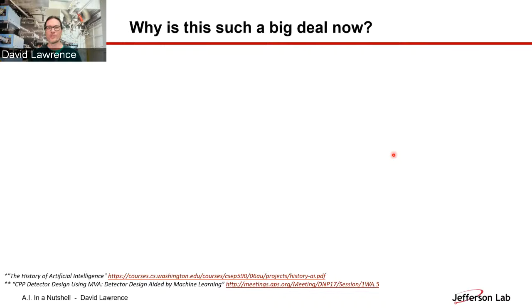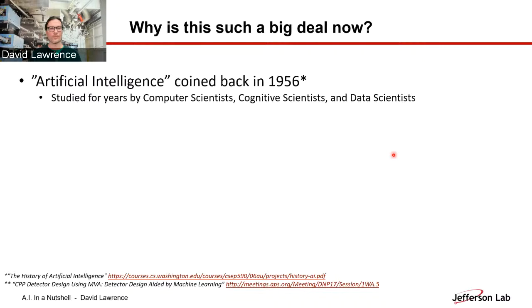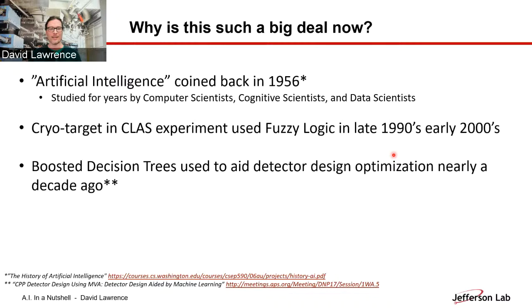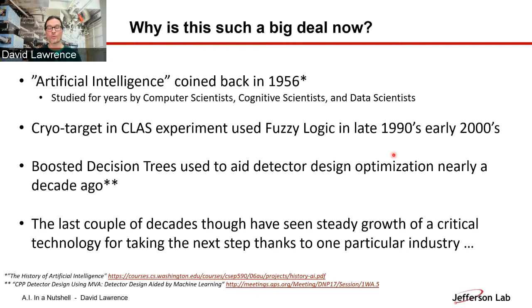So you may ask, OK, artificial intelligence, why is this such a big deal now? Haven't we known how the brain works for a long time and wanted to do this kind of stuff? And the answer is absolutely we have. Artificial intelligence is a term that was coined all the way back in the 1950s. Ever since then, this has been studied by computer scientists and cognitive scientists and more recently a lot more by data scientists. Here at Jefferson Lab, we've done a number of things over the years that have involved this. Back in the late 90s and early 2000s, we controlled a cryo target in the CLAS experiment with a type of AI called fuzzy logic. We also did some detector design optimization nearly a decade ago using boosted decision trees, which is another type of AI. But the last couple of decades, we've really seen a very steady, actually very increased, almost exponential growth of the critical technology that's really kind of paved the way for us having artificial intelligence be such a big deal now.